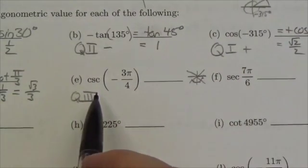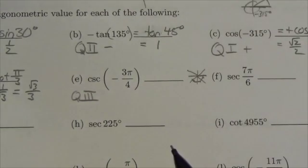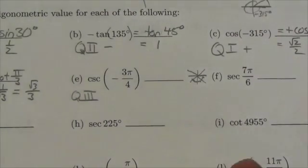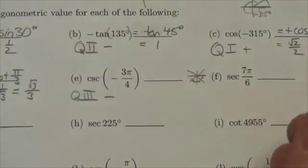Is cosecant positive or negative in quadrant 3? Well, cosecant is the reciprocal of sine. Reciprocating doesn't change the sign of a number. If you flip a number, if it's positive, it stays positive. Negative stays negative. So sine is negative in the third quadrant, so cosecant will be too.